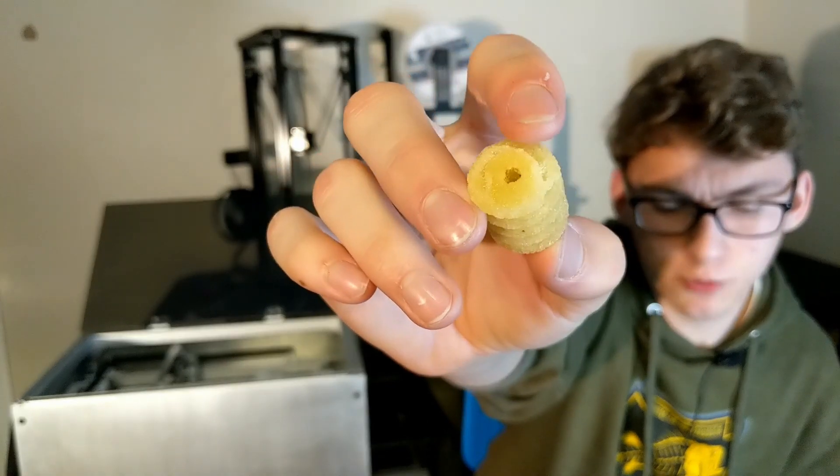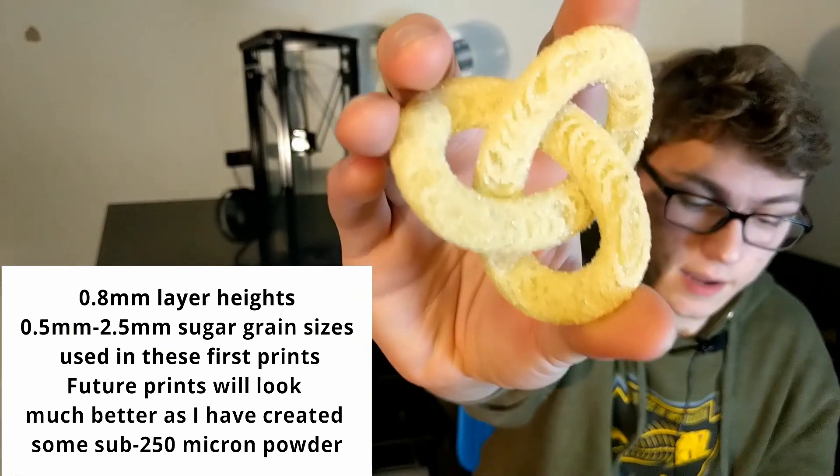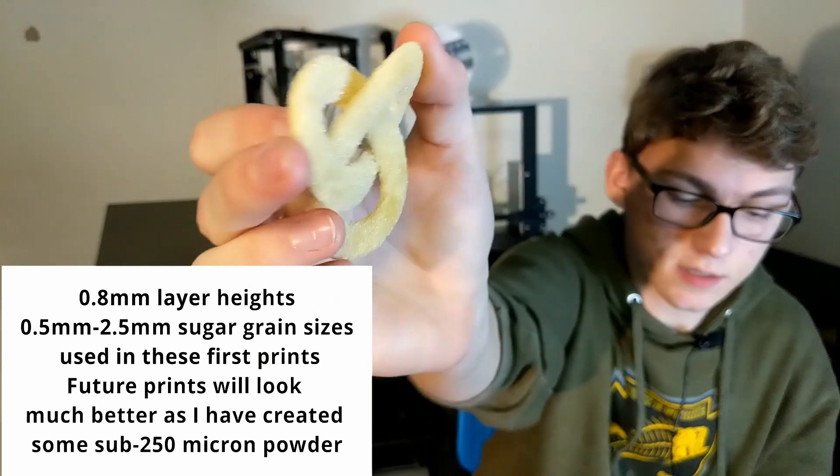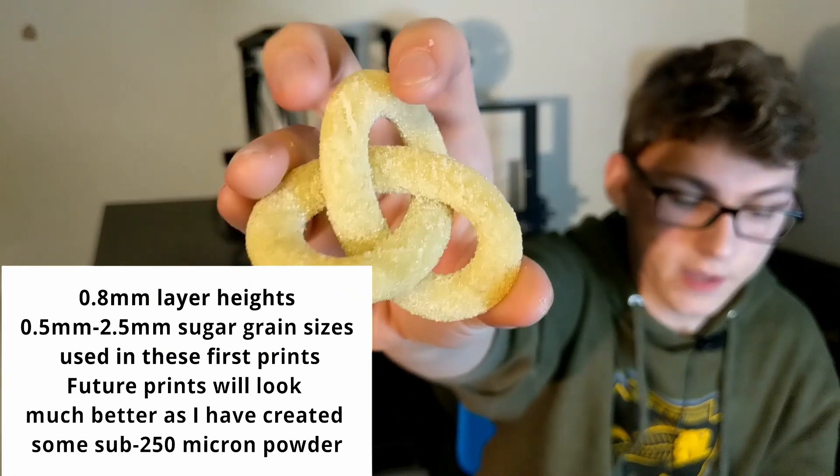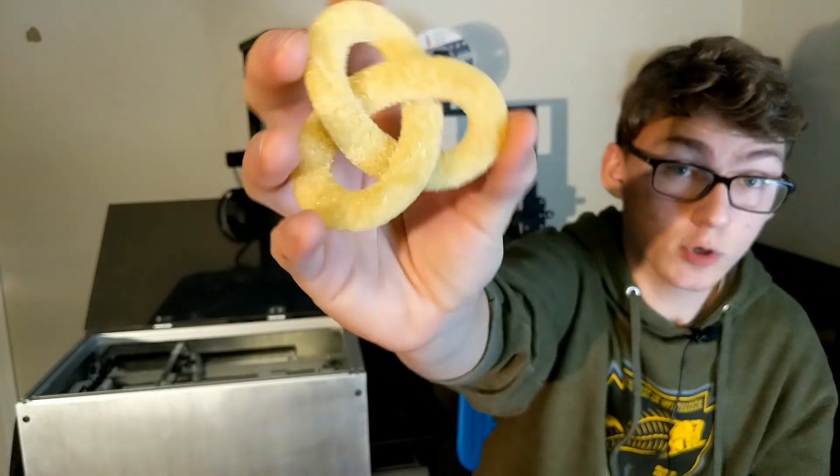This was actually pretty coarse materials and pretty rough settings that I used on this because of that grain size. But again, this is the bottom layer. This is the top layer. No supports at all. This is just normal sugar.